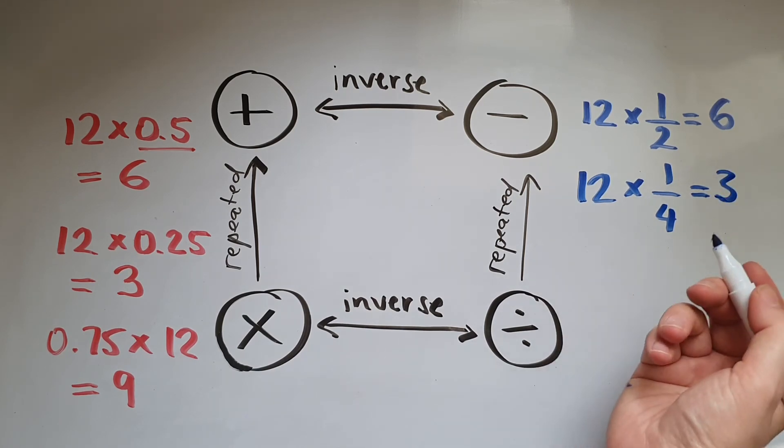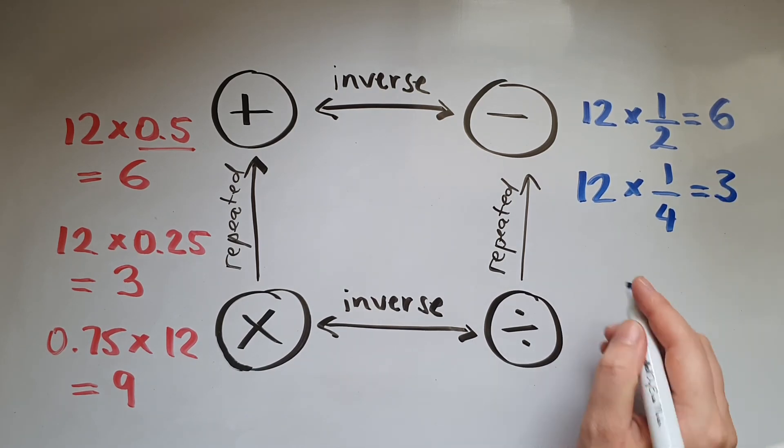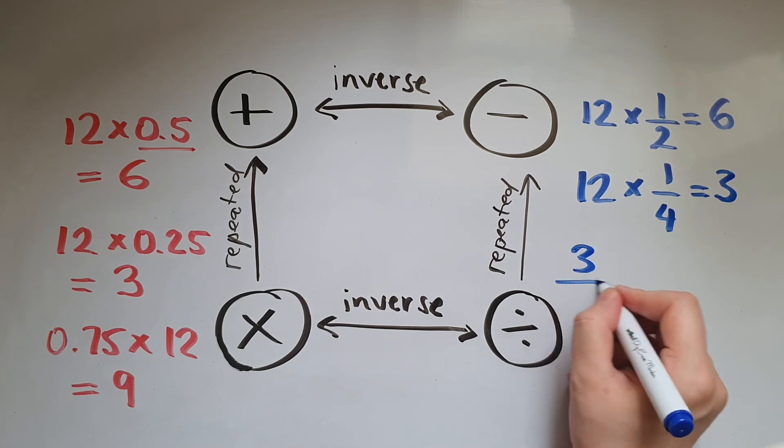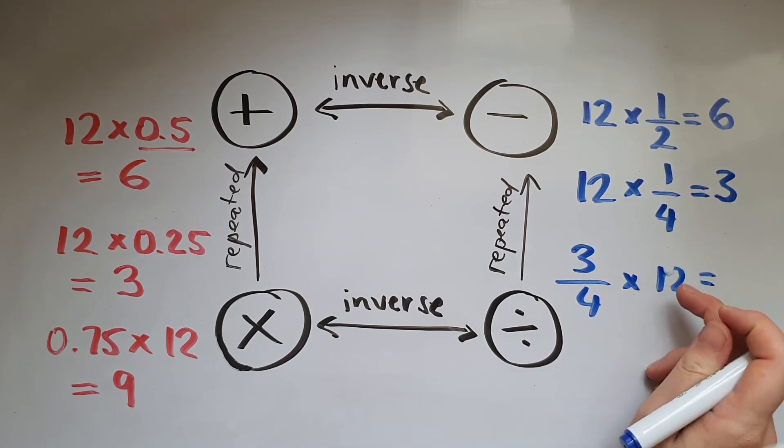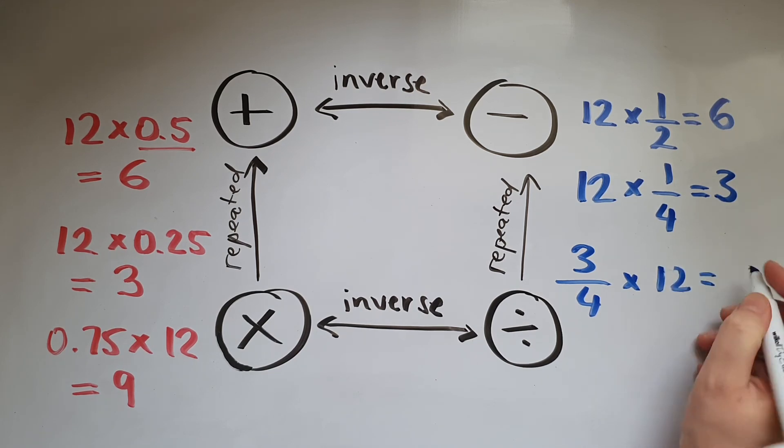If I multiply 12 by 3 quarters, or 3 quarters by 12, that means I'm working out 3 quarters of 12, which is 9.